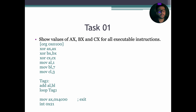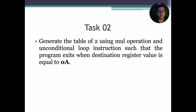To enhance your understanding of loops, you can dry run the code given in Task 1. Task 2 asks us to generate the table of 2 using the MUL operation and unconditional loop instruction, such that the program exits when the destination register value is equal to 0A. Let's implement this task using assembly language.